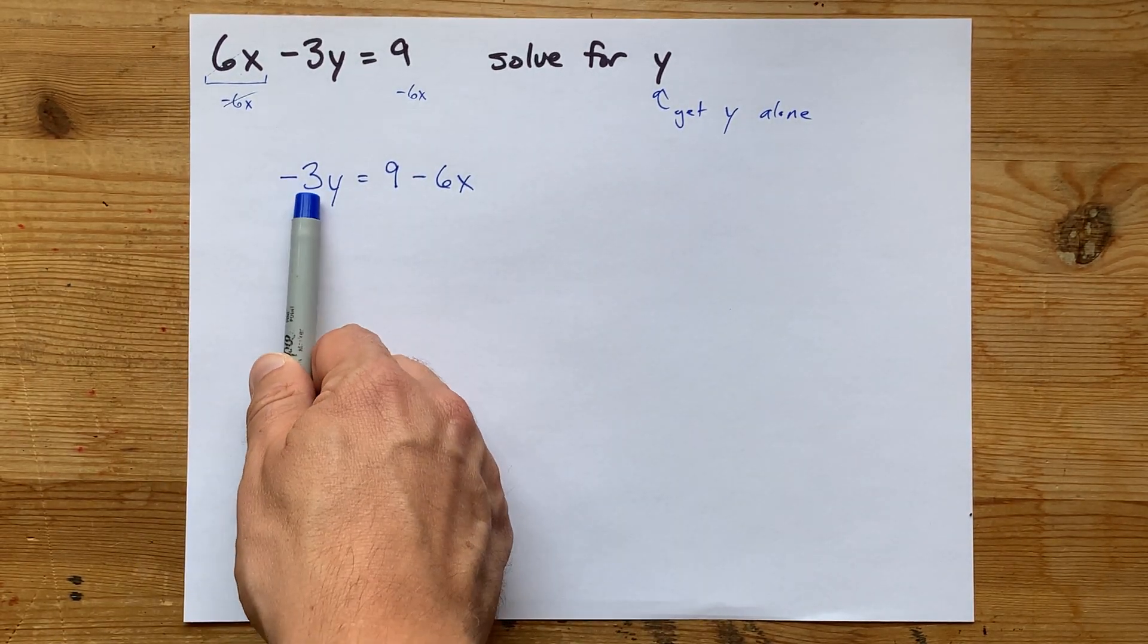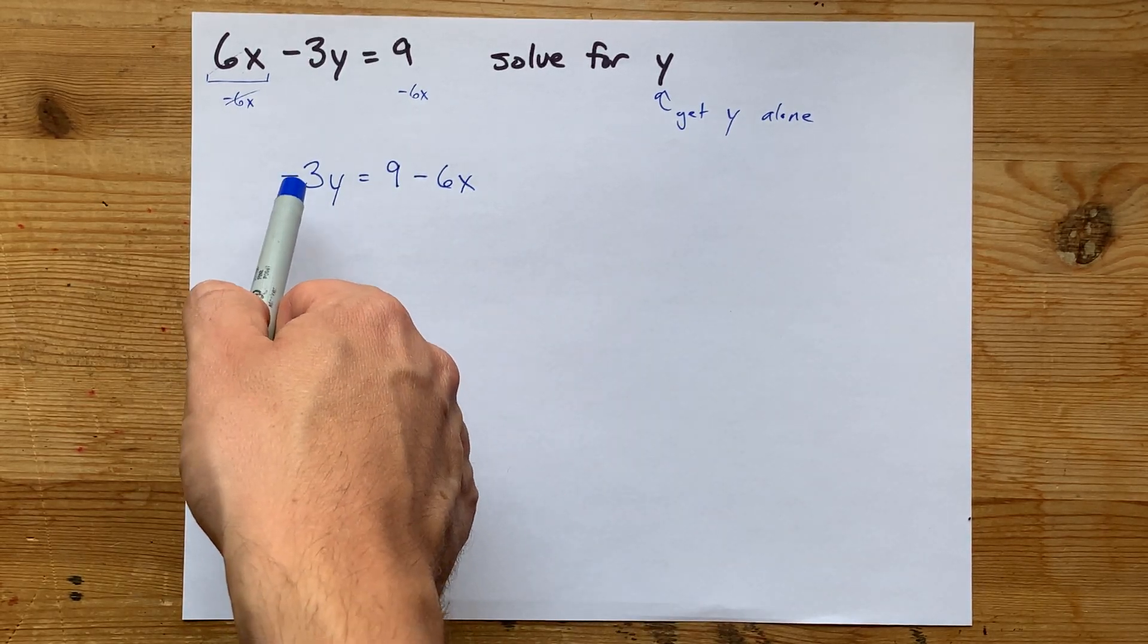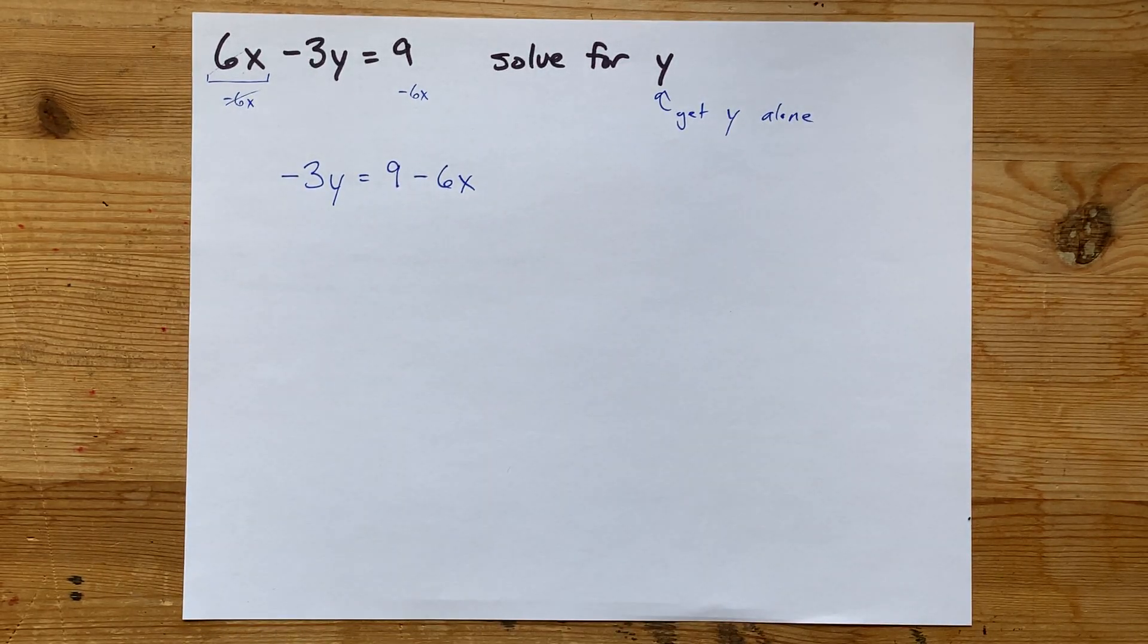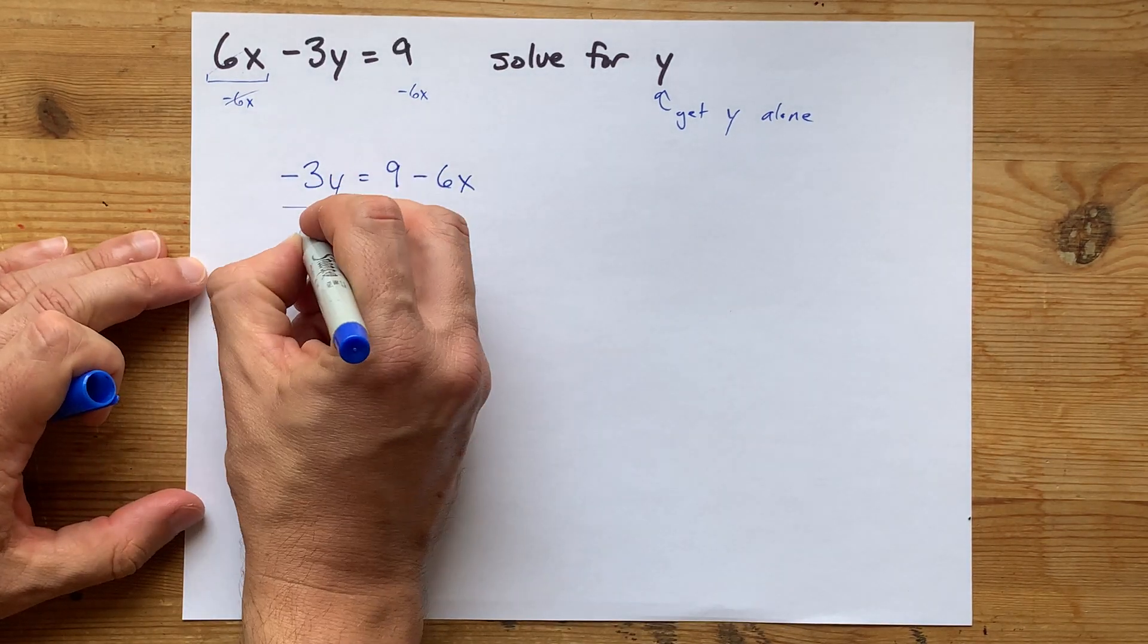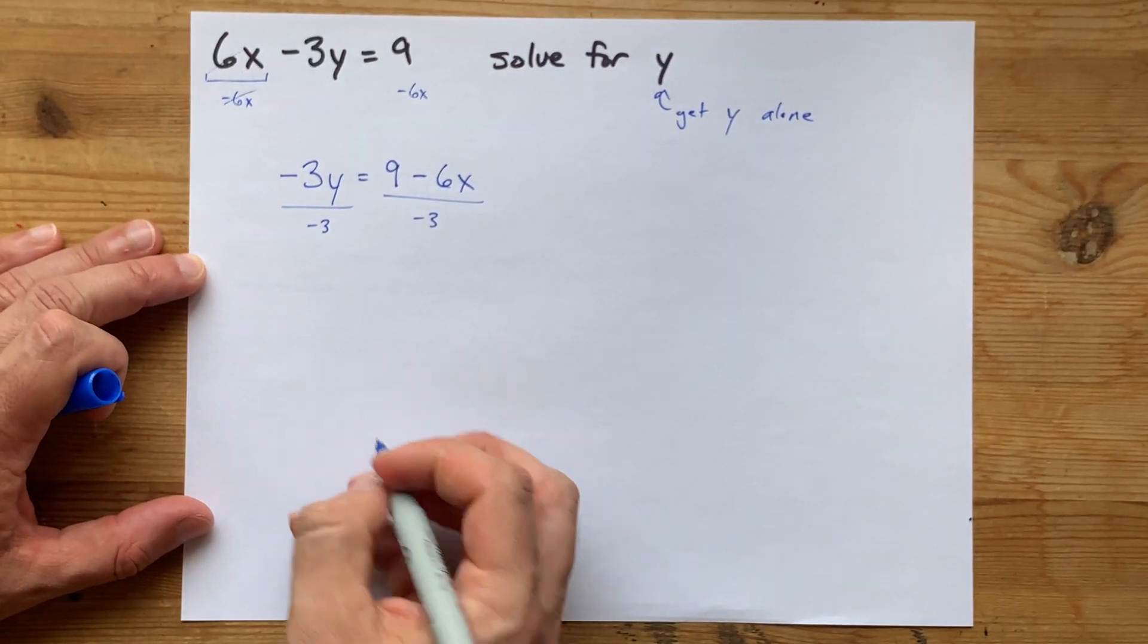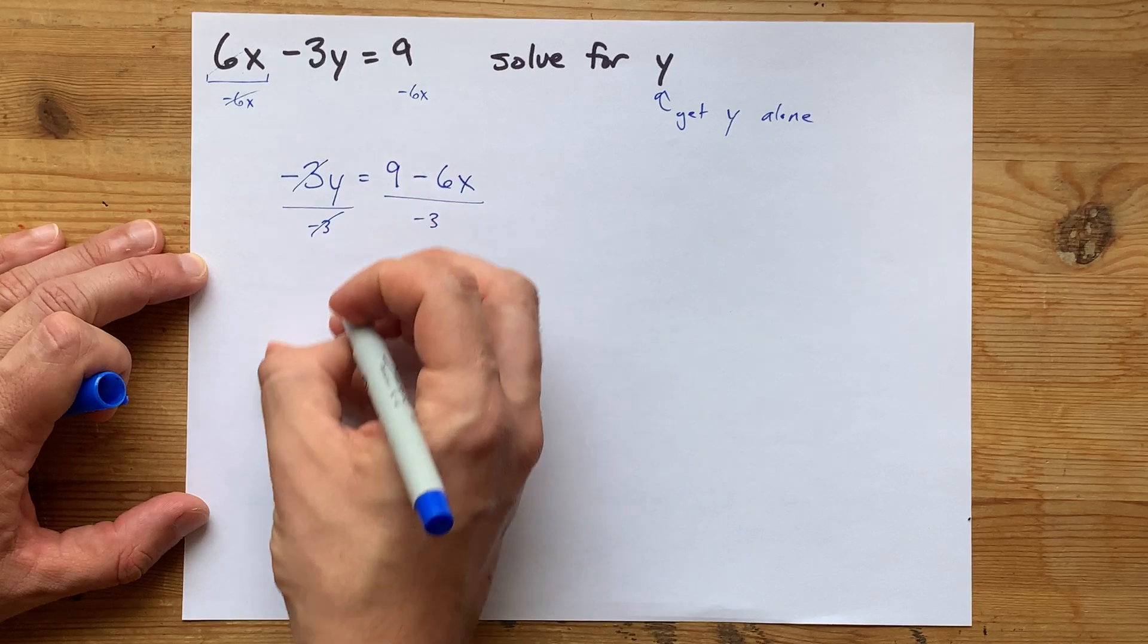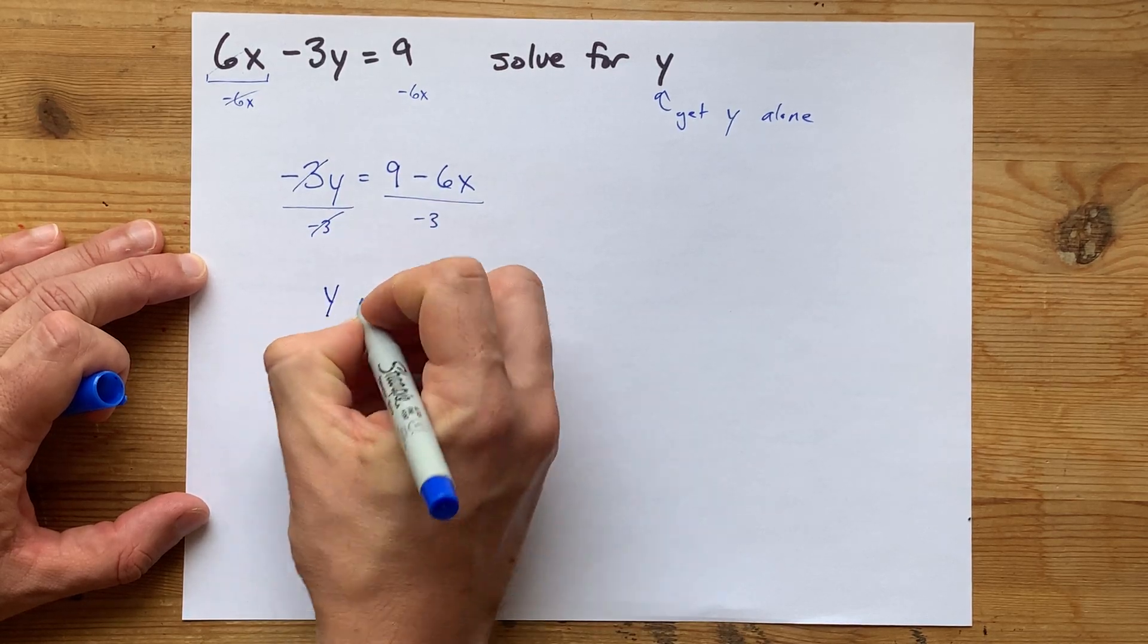Now, you've got negative 3 times y. How do you undo that multiplication by negative 3? The answer is you can divide everything by negative 3. Divide both the left and right-hand sides by it. These negative 3s cancel out, and what I'm left with on the left-hand side here is just y.